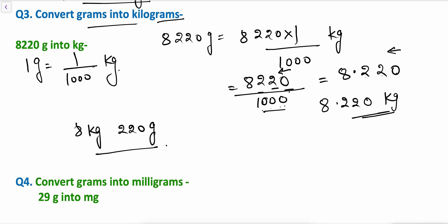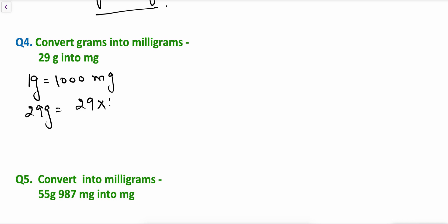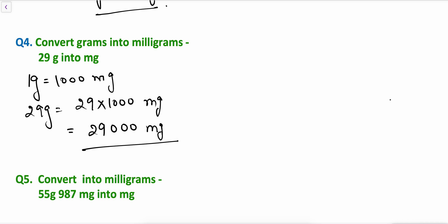Let's see one more example: convert grams into milligrams. 1 gram equals 1000 milligrams. So 29 grams will be 29 into 1000 milligrams, which equals 29000 milligrams. This is the conversion.